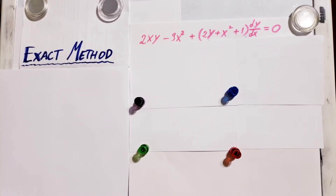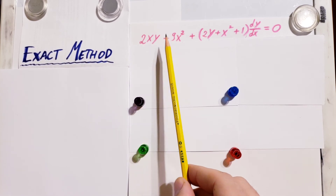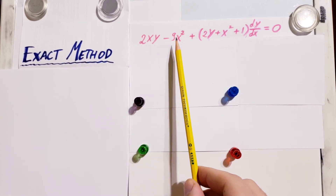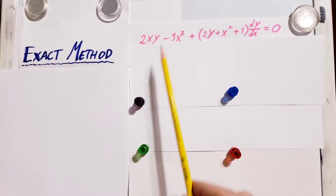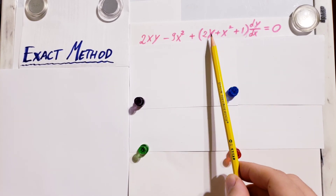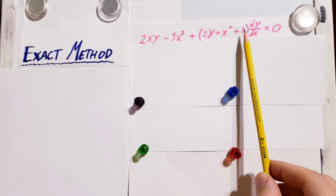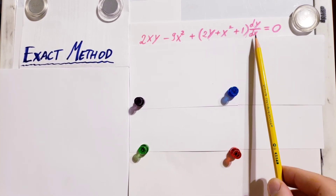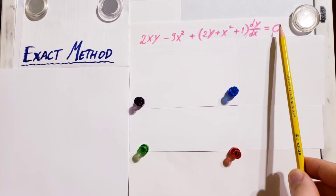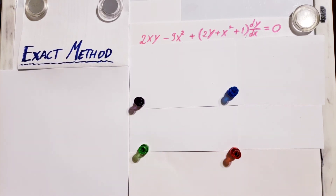Let's solve this differential equation. We have: 2xy minus 9x squared plus, in parentheses, 2y plus x squared plus 1, times dy/dx equals 0. We're going to try to solve this one with the exact method.